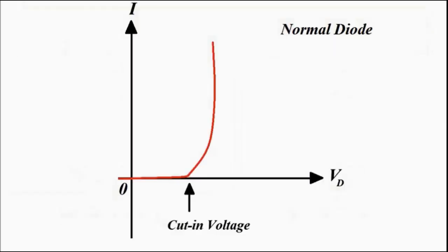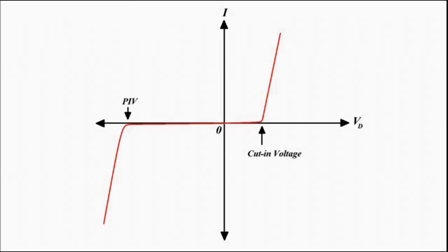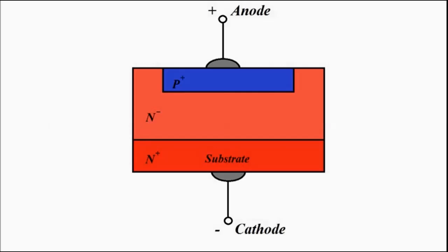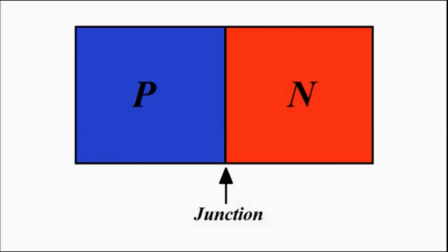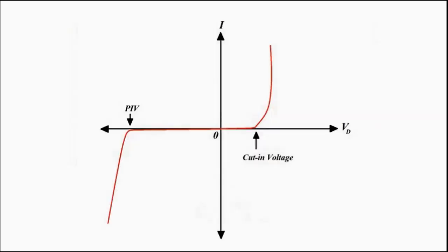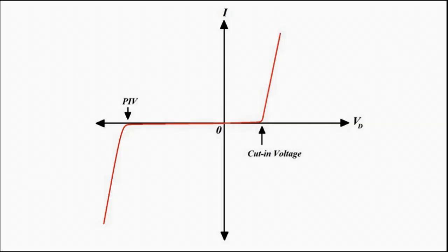In the previous video we discussed that when the diode is connected in forward biased mode, in case of normal diodes the current increase is first exponential and then linear as per the Shockley diode equation. In case of power diodes, because of the presence of the extra n-minus layer which contributes significant ohmic resistance and because it handles high magnitude current, the exponential portion is absent — it is almost linear in shape.